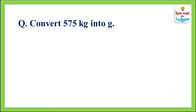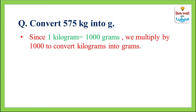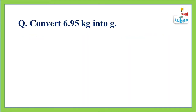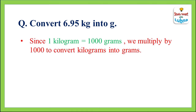In this question we have to convert 575 kilograms into grams. As we know, 1 kilogram is equal to 1,000 grams, so we multiply by 1,000. We will multiply 575 by 1,000. After multiplying, we will get 575,000 grams. So 575 kilograms is equal to 575,000 grams.